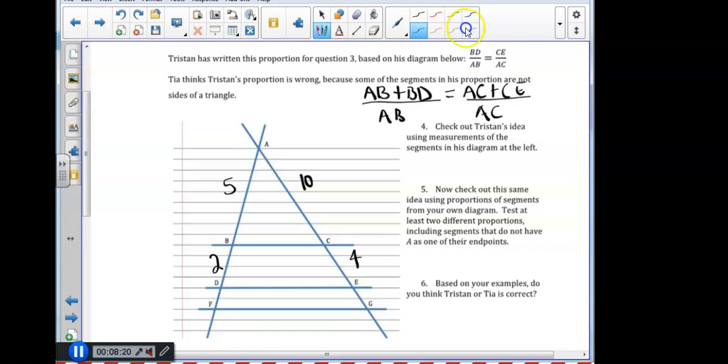So let's plug in the numbers that we have. The length of AB is 5, the length of BD is 2, and AB is 5. And that should equal AC which is 10 plus CE is 4 divided by 10. So let's simplify that. The numerator, I get 7 fifths equals 14 tenths. If I simplify 14 tenths and divide numerator and denominator by 2, I do get 7 fifths.